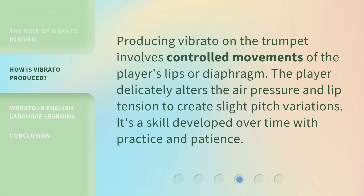Producing vibrato on the trumpet involves controlled movements of the player's lips or diaphragm. The player delicately alters the air pressure and lip tension to create slight pitch variations. It's a skill developed over time with practice and patience.